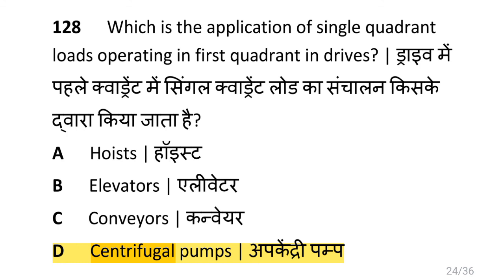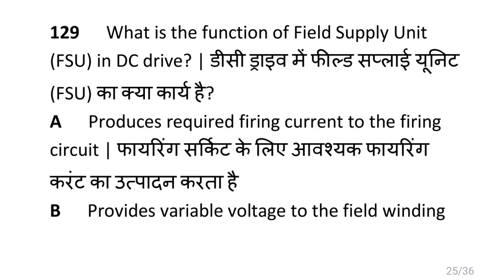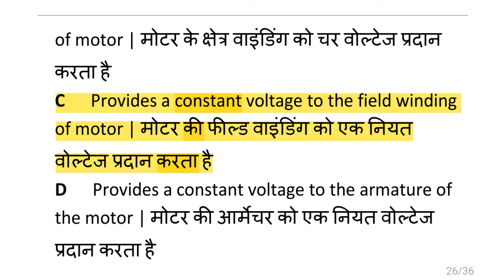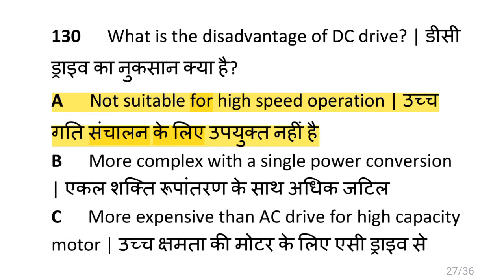Which is the application of single quadrant load operating in the first quadrant in drives? That is centrifugal pump. What is the function of field supply unit FSU in DC drive? It protects and provides a constant voltage to the field winding of motor. What is the disadvantage of DC drives? That is not suitable for high speed operation.